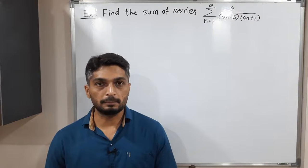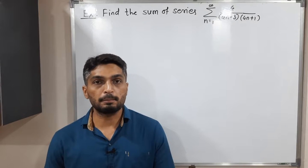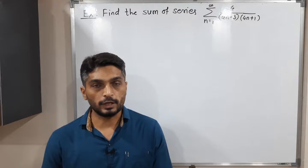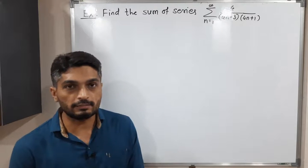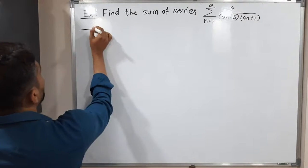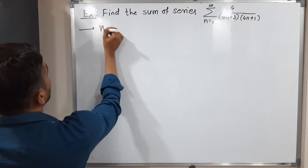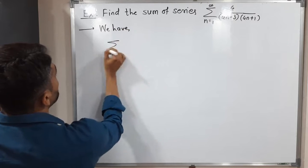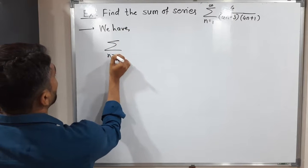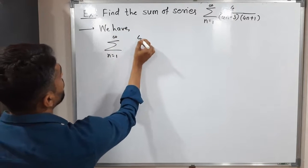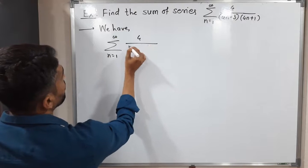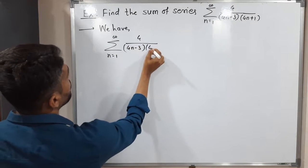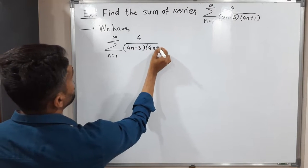Let us discuss this example. In this example, we have this series and we have to find its sum. Let us write the given series. We have our series: summation n running from 1 to infinity of 4 upon (4n minus 3) into (4n plus 1).